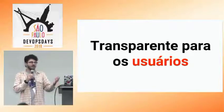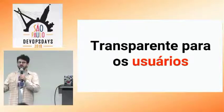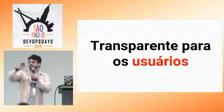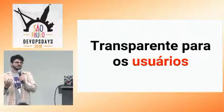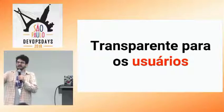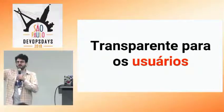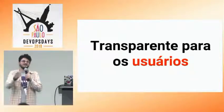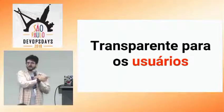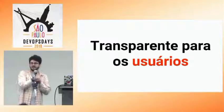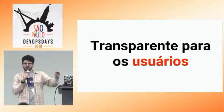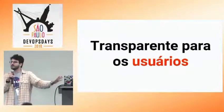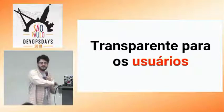Uma coisa interessante é que isso ficou transparente para os usuários da solução. O desenvolvedor do G1 que quer liberar acesso da sua aplicação para o banco usa uma interface web na frente da ACL API — um software que a gente chama de Libera. Ele vai no Libera, faz o pedido de A para B, e não sabe que por baixo dos panos a gente trocou e evoluiu a solução. Isso ficou totalmente transparente para quem está usando.